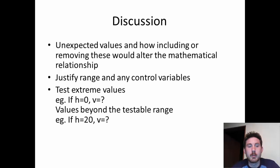I would expect you to use your mathematical relationship to test extreme values. So a good example in our simulation experiment would be, if h equals 0, then what would velocity be? And that should be fairly obvious, but you can substitute h into the equation, find out what v is, and then discuss whether that seems reasonable or not. I might also test values that are beyond the range of what I could feasibly test in the experiment. And so if I had a ridiculously large height, then what would my velocity be? Or if I wanted to predict the height that would result in a certain velocity, then I could do that as well.